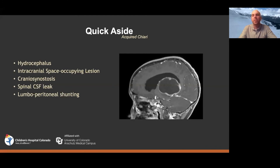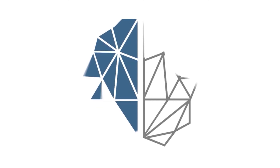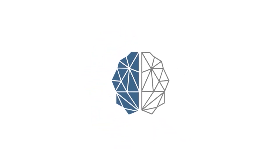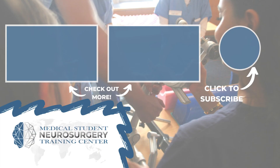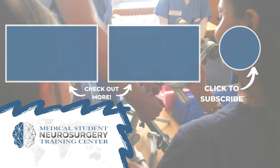You take care of the tumor and you don't worry about the Chiari. Similarly, if a kid has hydrocephalus, you treat the hydrocephalus and then see if the Chiari is still a problem. It's important to think holistically and recognize that just because someone has a Chiari doesn't mean there isn't something else driving it.